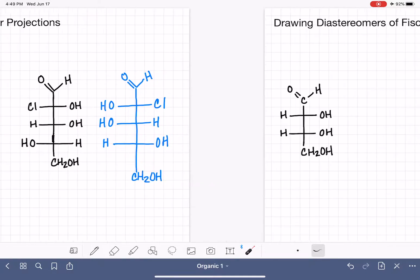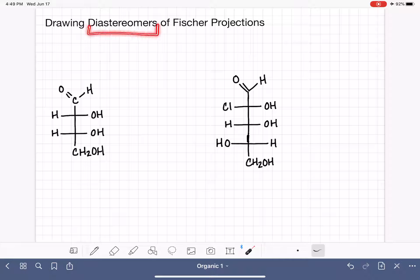Another thing that you want to be able to do is draw a diastereomer of a Fischer projection. Diastereomer is something that students a lot of times forget what that means. So a diastereomer is a non-mirror image. It's a stereoisomer, meaning it has the same connectivity, but it's not a mirror image. And a great example of diastereomers is cis versus trans alkenes, not mirror images of each other.